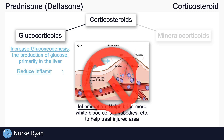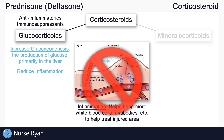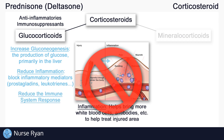Glucocorticoids, however, reduce inflammation and reduce the immune system response — so glucocorticoids are anti-inflammatories and immunosuppressants. This might sound kind of weird because we know that inflammation and the immune system are good at fighting off infection and helping with healing, but this will all make sense in just a few minutes. Glucocorticoids reduce inflammation by blocking the messengers that cause it. These messengers are called inflammatory mediators and include things like prostaglandins and leukotrienes. If we block these inflammatory mediators, we get less inflammation and the immune system doesn't respond as quickly. So to summarize: glucocorticoids increase the production of glucose, decrease inflammation, and decrease the immune system response.